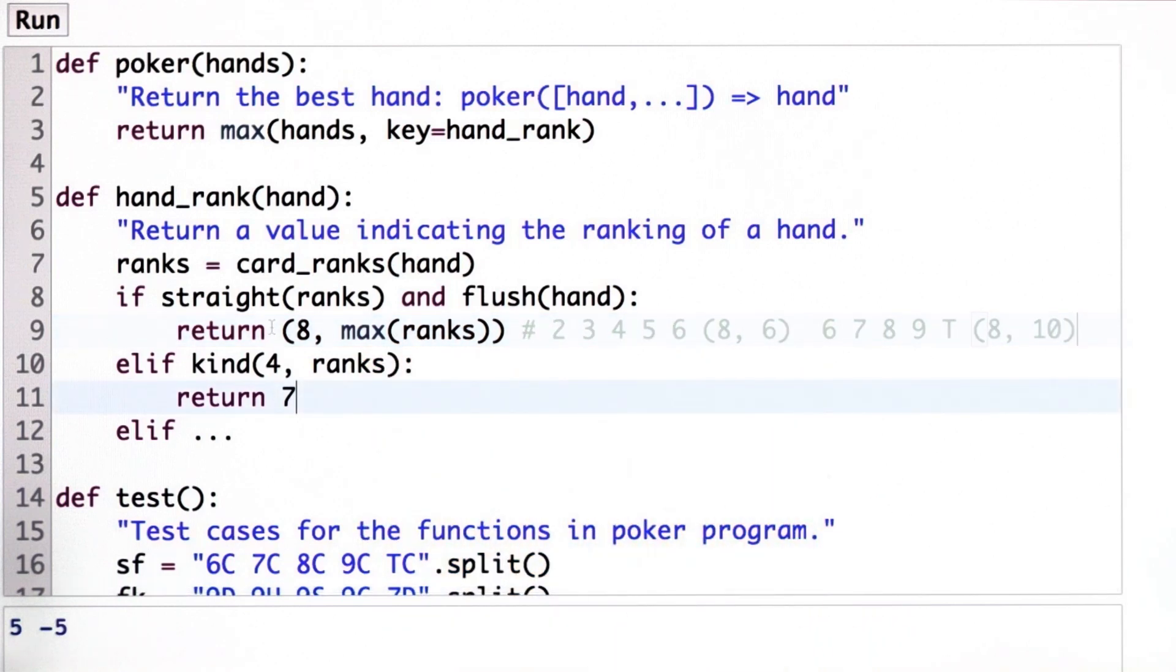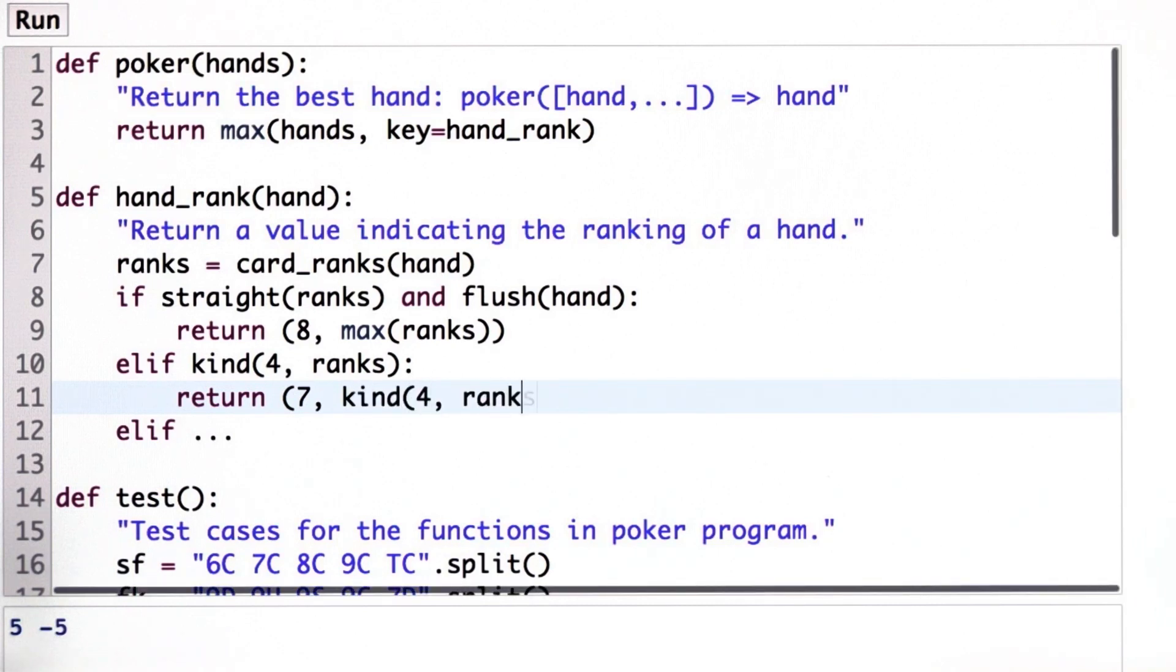Now we can do the same type of thing for all the other rankings. So rank 7 is 4 of a kind. What do we want to put in there to break the tie? Well, the first tiebreaker is the thing that you have 4 of a kind of. So you say, I've got 4 of a kind, 4 kings. And we can just say, what do you have 4 of a kind of?